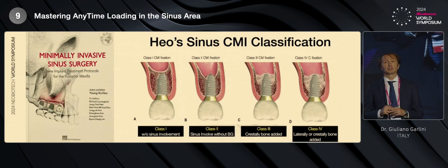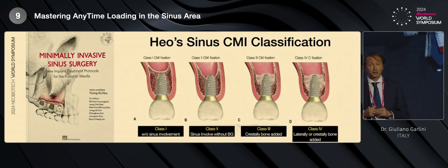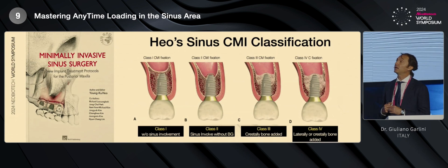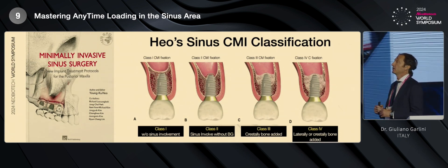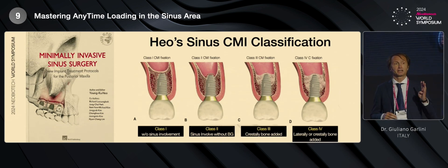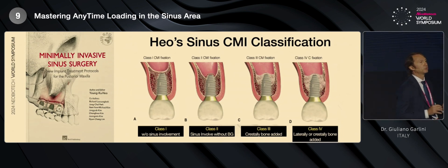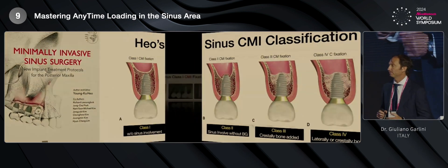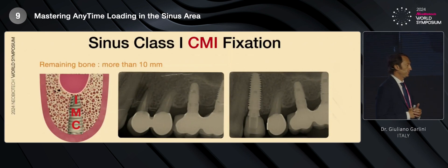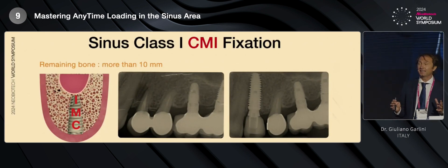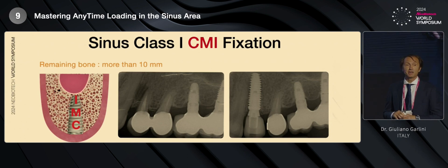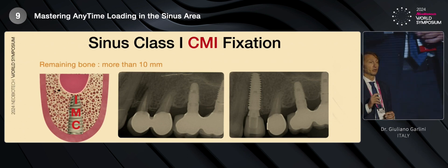Speaking about the sinus area, I obviously have to refer to the book of Dr. Rowe that was published 10 years ago, more or less, about the minimally invasive sinus surgery, where he clearly explained that we can have four different clinical situations. And now we will go deeper inside every clinical situation to understand how we can reach an optimum CMI fixation, if it's possible. So let's see sinus class 1. In sinus class 1, we have at least 10 mm or more remaining bone. So it seems to be a very easy situation to be treated, but this is not true, and I will show you why.